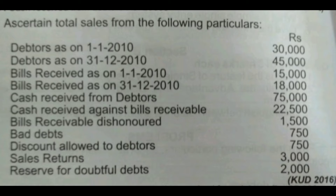Ascertain total sales from the following particulars. Debtors as on 1-1-2010: Rs. 30,000. Debtors as on 31-1-2010: Rs. 45,000. Bills receivable as on 1-1-2010: Rs. 15,000. Bills receivable as on 31-1-2010: Rs. 18,000. Cash received from debtors: Rs. 75,000. Cash received against bills receivable: Rs. 22,500. Bills receivable dishonored: Rs. 1,500. Bad debts: Rs. 750. Discount allowed to debtors: Rs. 750. Sales returns: Rs. 3,000. Reserve for doubtful debts: Rs. 2,000.